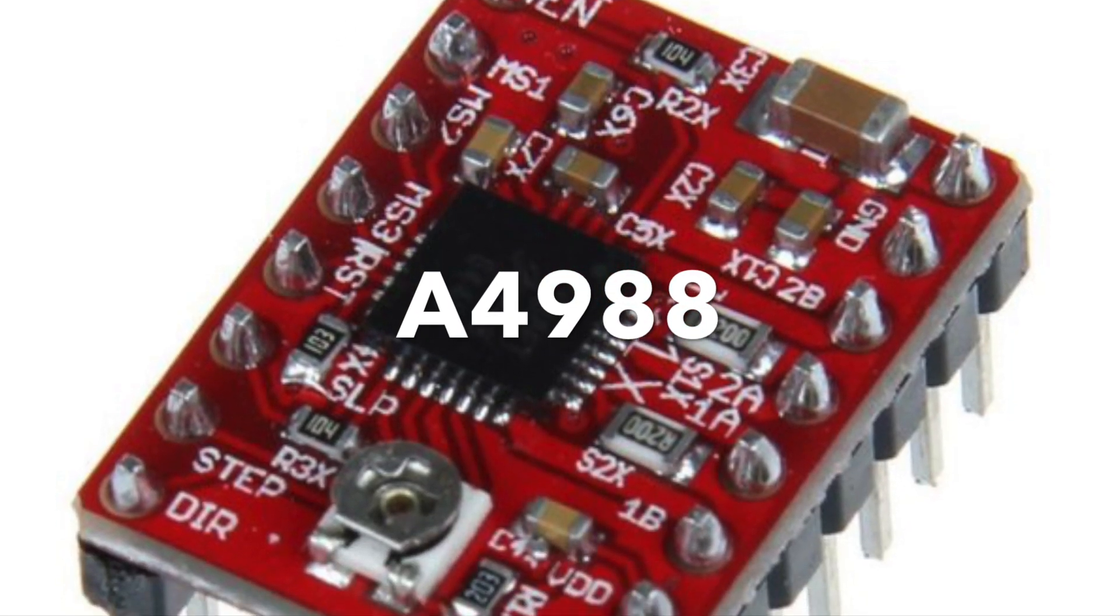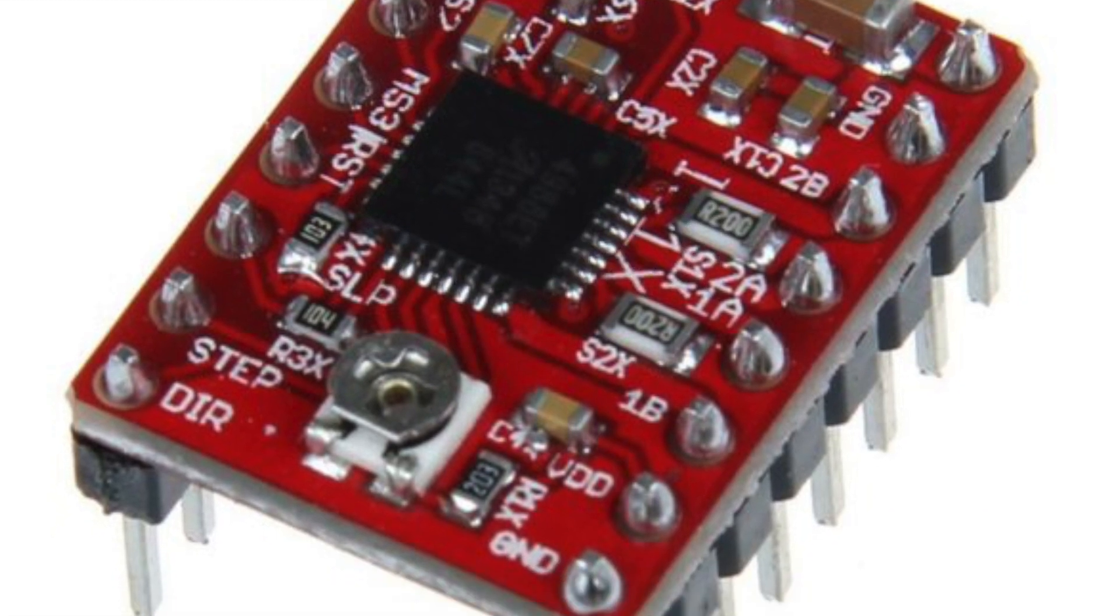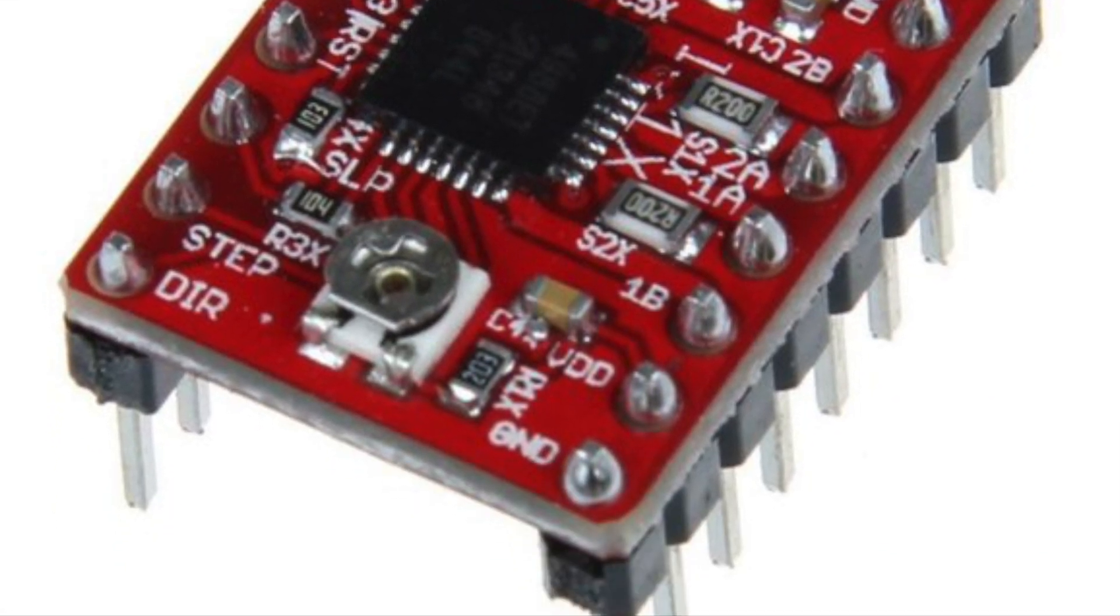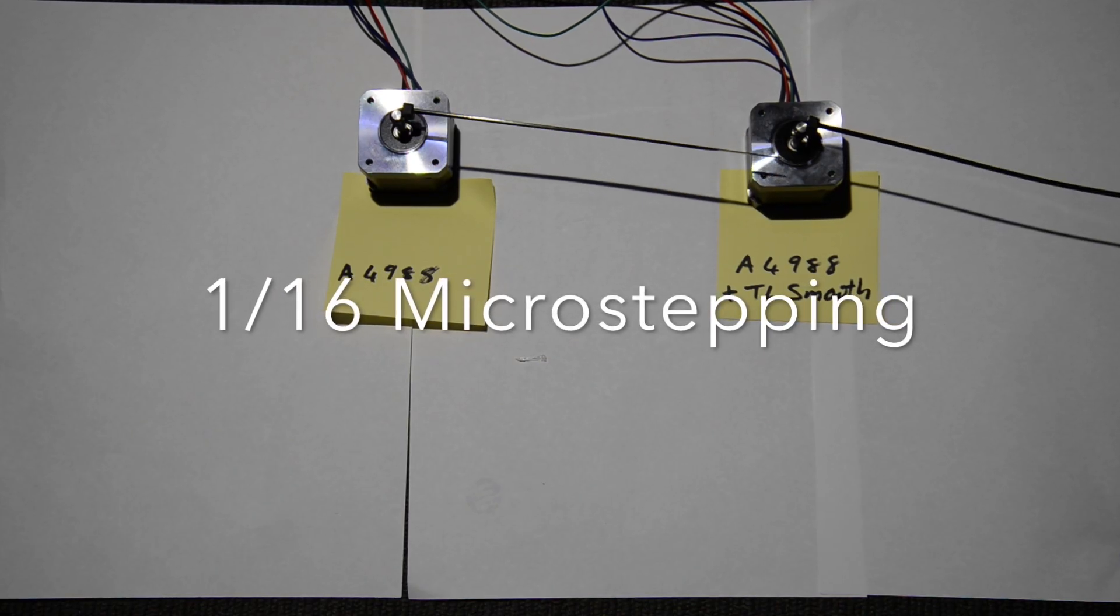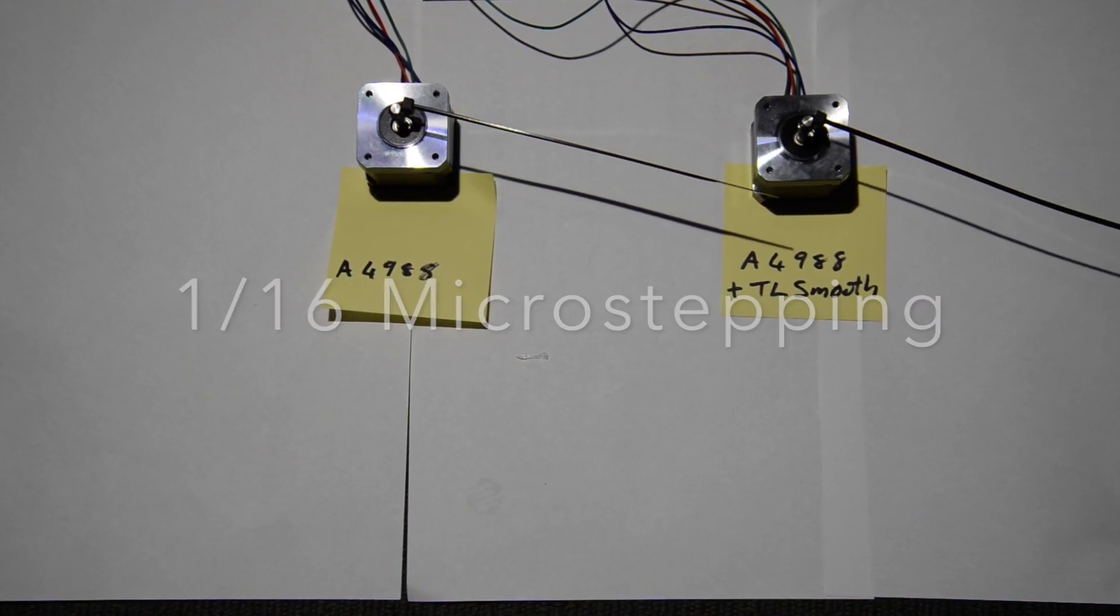The first test was with the A4988. These are normally the red ones. I tested them at 1/16th microstepping, and if you look closely, it looks like there's a small difference